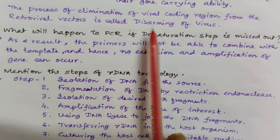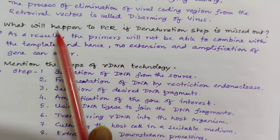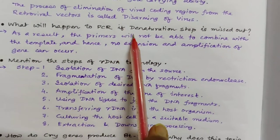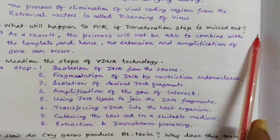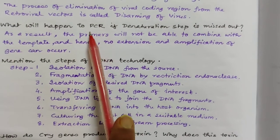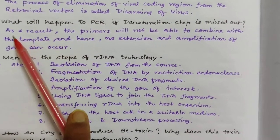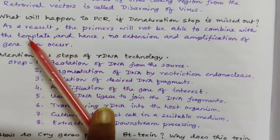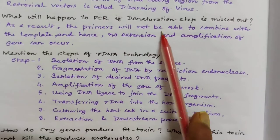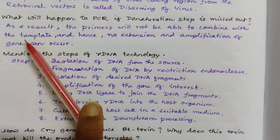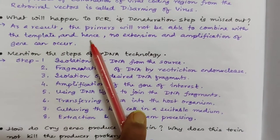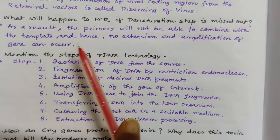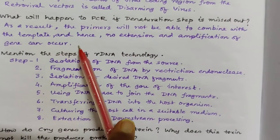What will happen in PCR if the denaturation step is missed out? In polymerase chain reaction, if the denaturation step is missed, the primers will not be able to combine with the template, and hence no extension or amplification of the gene can take place.